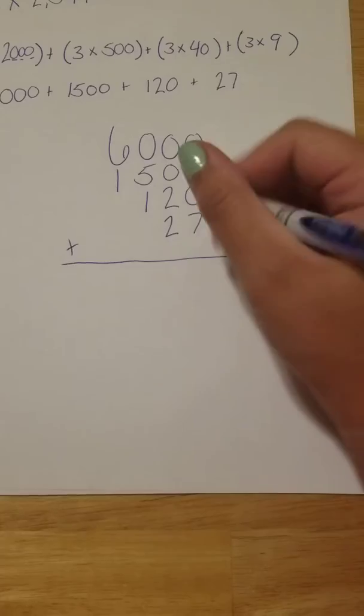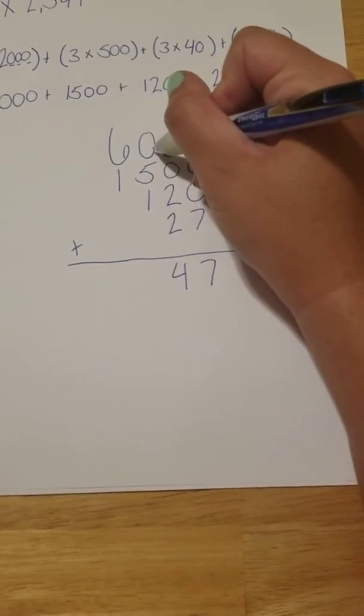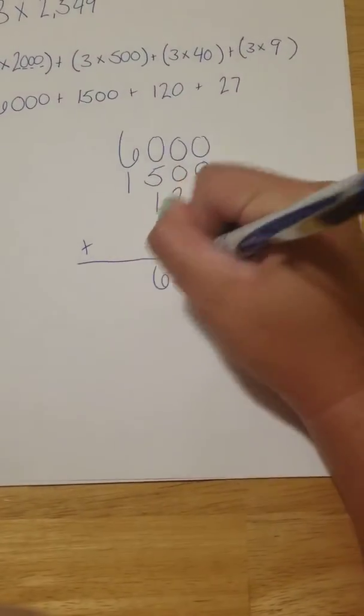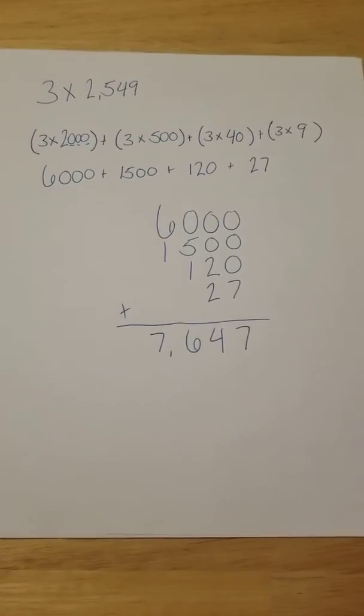0 plus 0 plus 0 plus 7. 0, 0, 2, and 2 is 4. 0, 5, and 1 is 6. 6, and 1 is 7. 7,647.